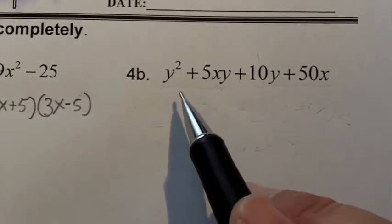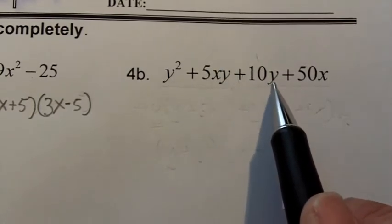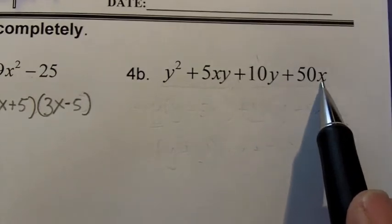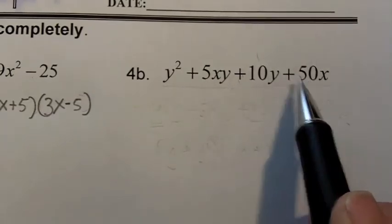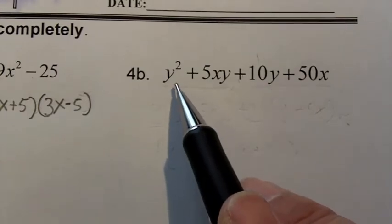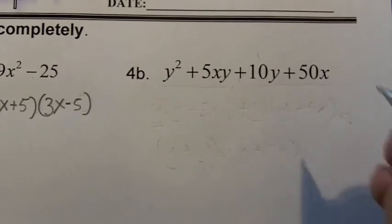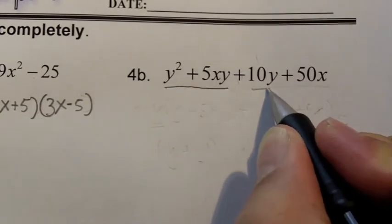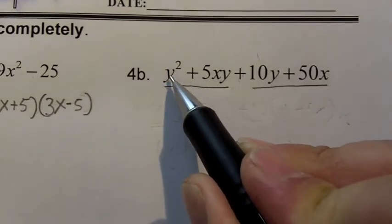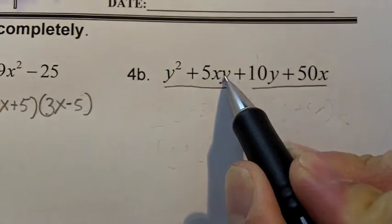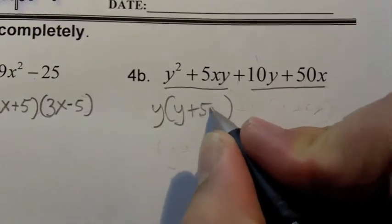Now let's take a look at problem 4b. Checking for a greatest common factor: I have a y in some terms but not all, and for the numbers 1, 5, 10, and 50, the only common factor is 1, so there's no GCF. I have four terms, so I want to factor by grouping. I group the first two together and the second two together and look for a GCF in each group. The first group has a common factor of y, which gives me y(y + 5x).